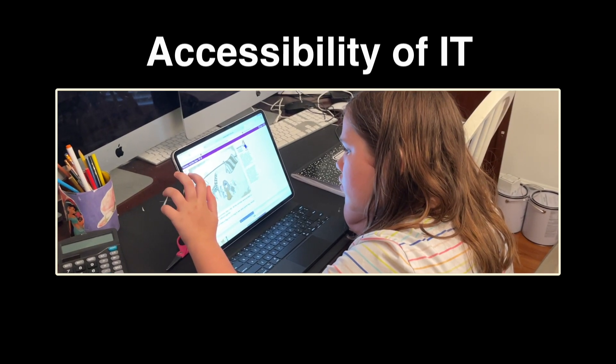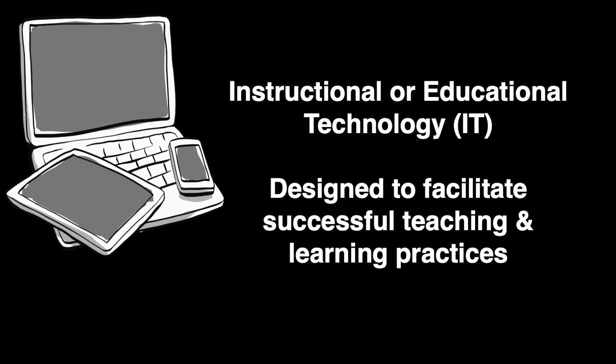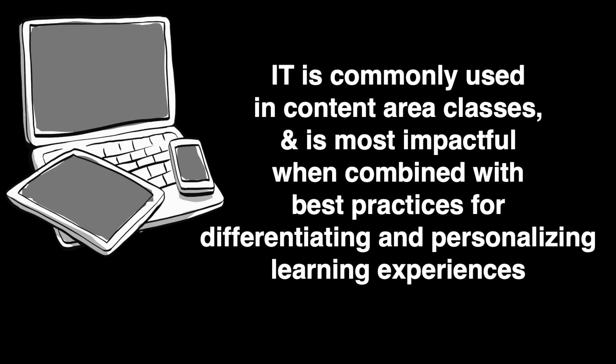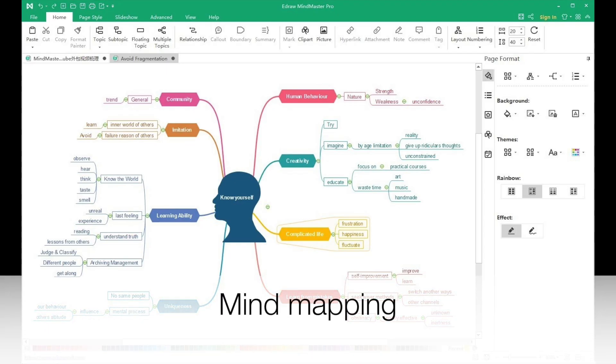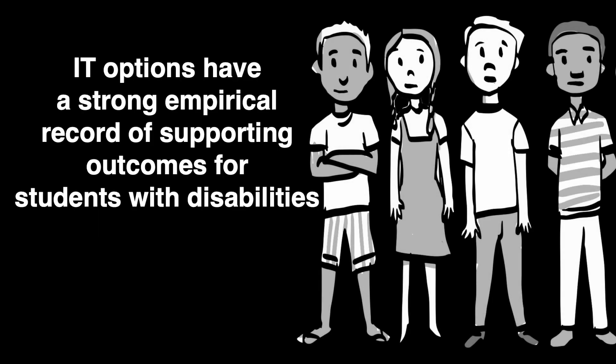Accessibility of Instructional Technology: Instructional Technology, or IT, is designed to facilitate successful teaching and learning practices. Commonly used in general education subject areas, including literacy and mathematics, IT is most impactful when teachers combine it with best practices for differentiating and personalizing learning experiences for students with and without disabilities. An example is mind mapping software, which enables students to create visual representations for vocabulary, concepts, and processes by using non-linear graphical layouts. Such IT has proven valuable for many students, particularly those with learning disabilities and autism.